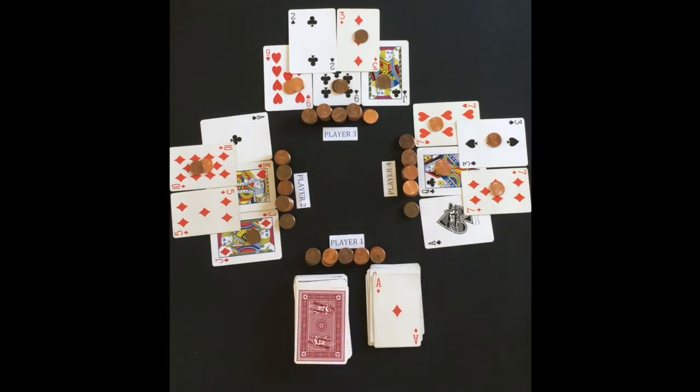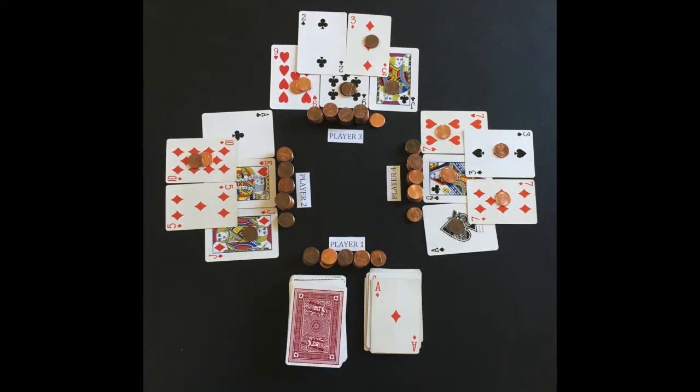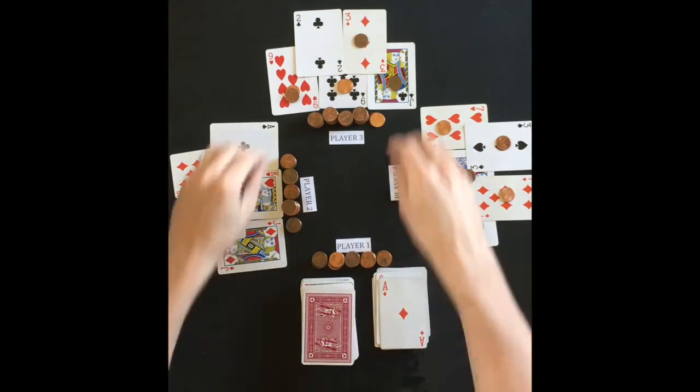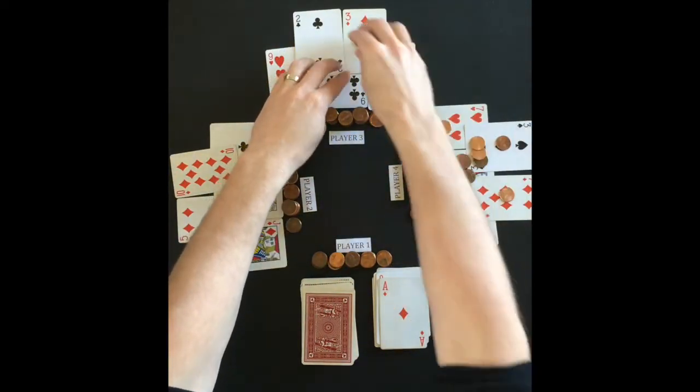With the ace, player 4 gets a bingo and wins all the pennies from each player's cards. If there is a tie, the pennies are split between the tying players.